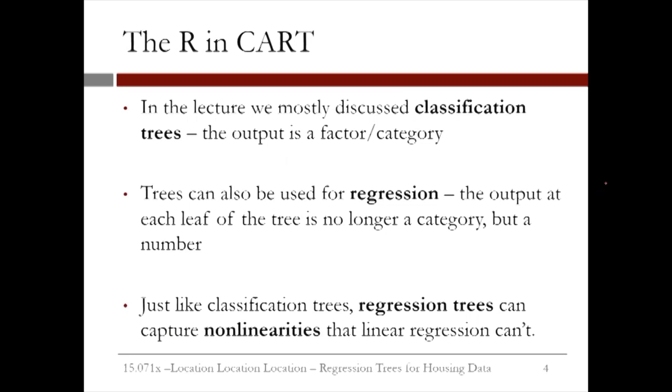Now, in the lecture, we mostly discussed classification trees, where the output is a factor or category. Trees can also be used for regression tasks. The output at each leaf of the tree is no longer a category, but a number. Just like classification trees, regression trees can capture nonlinearities that linear regression can't.